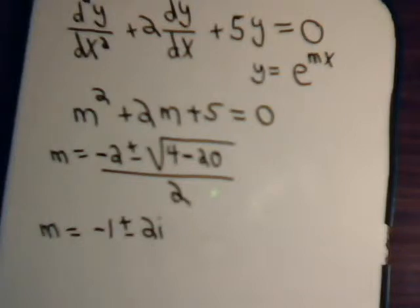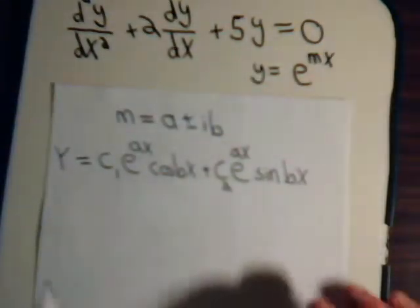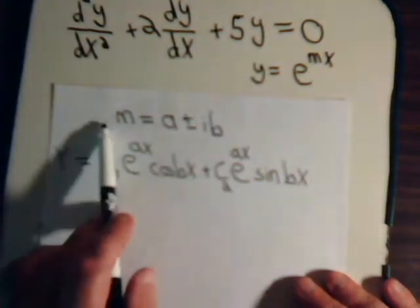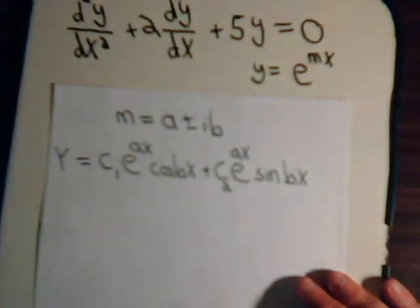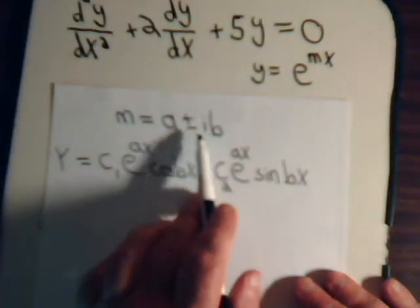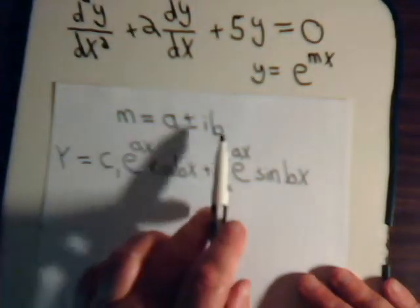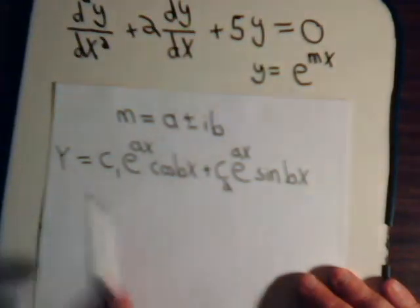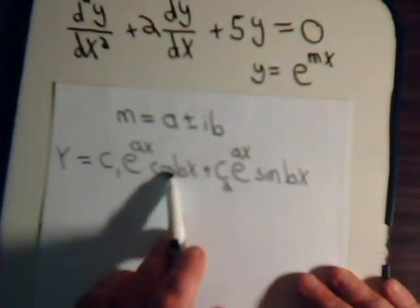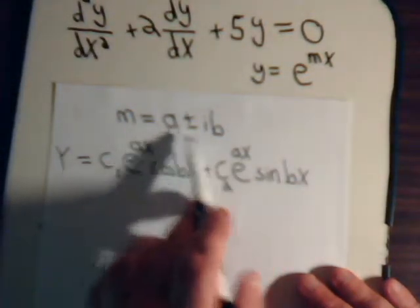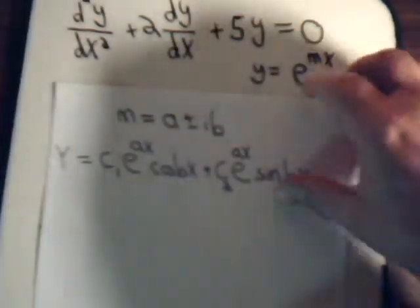What we demonstrated in the last video is that, when m has these complex values, specifically they occur together as complex conjugates, an a plus ib, and an a minus ib. Once we have that determined, we can immediately write down what the solution is. It's going to be e raised to the ax, cosine bx, plus e to the ax, times the sine of bx.